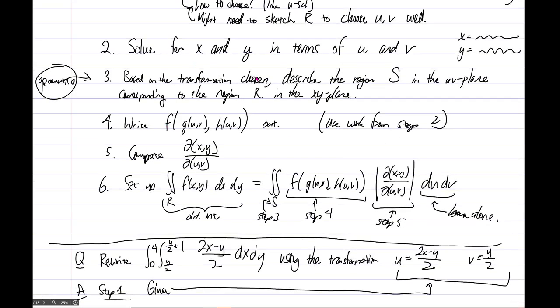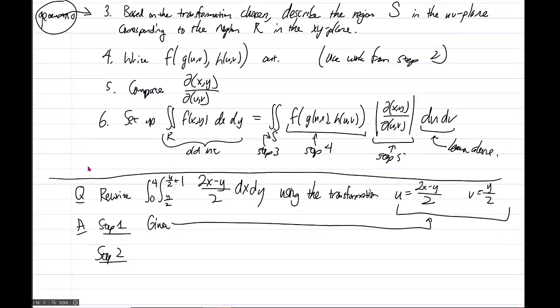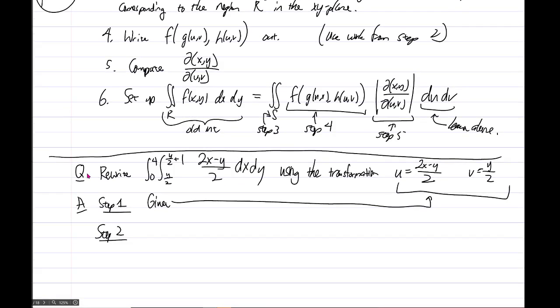Let's look at step 2. We need to solve for x and y in terms of u and v. So how are we going to do that? I think solving for y is easier. Take the equation v equals y over 2, so multiply both sides by 2, and you have y equals 2v. Cool. Good. We've got y written in terms of u and v. In fact, y only needs to be written in terms of v.